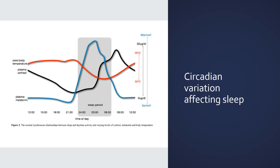Plasma melatonin and cortisol are also going to have effects on your metabolism. Cortisol has an effect on almost every cell in the body — in fact, the output of cortisol by the master clock is thought to play some role in synchronizing peripheral clocks as well. These factors are also going to affect immune function, metabolism, insulin sensitivity, and things of that nature.